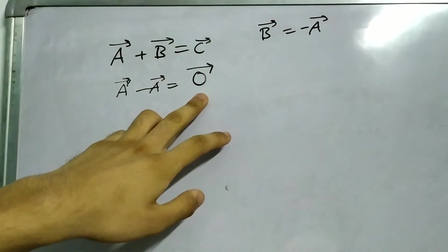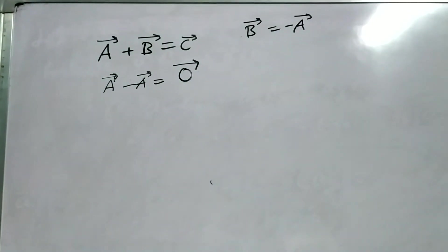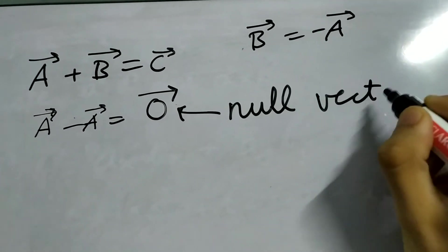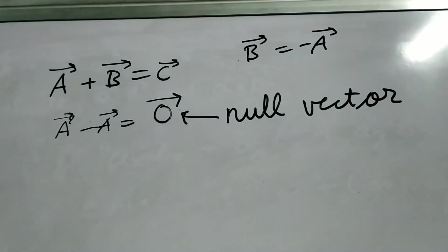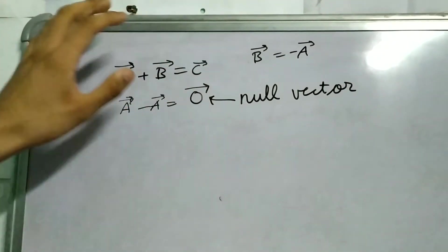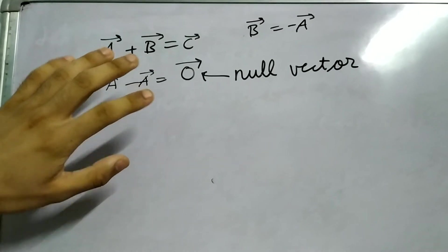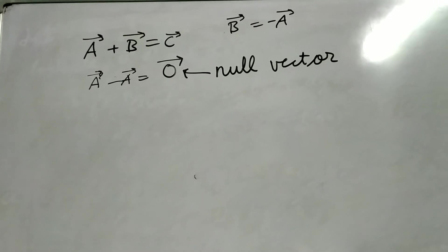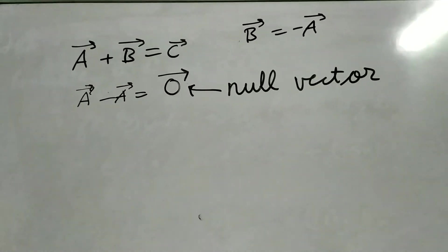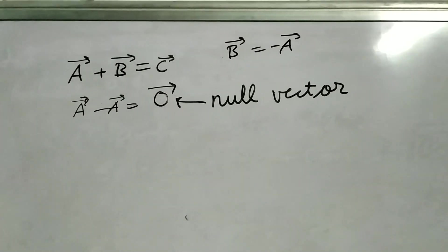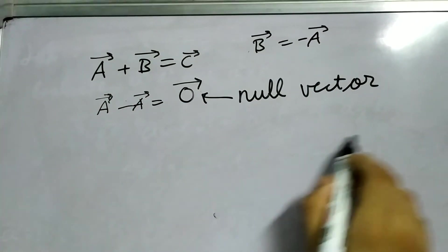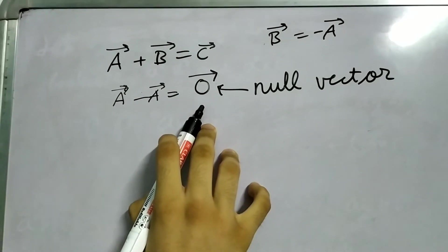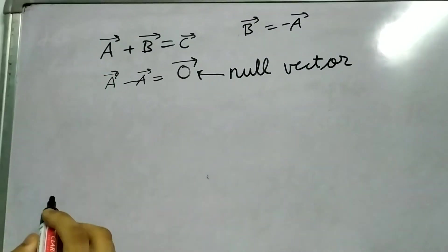A vector with magnitude zero. This is our null vector. And this is mostly for mathematical consistency for the equations. And physically, it doesn't have much significance. Almost no significance. So important thing is, it has no direction. This direction is undetermined.